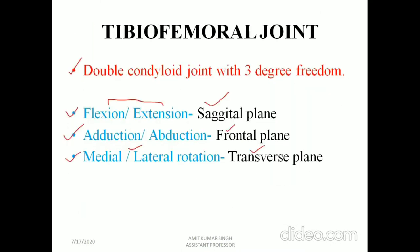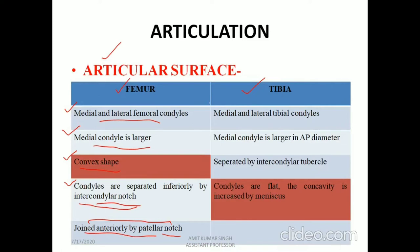For the tibia, we have medial and lateral tibial condyles. The medial condyle is larger in AP diameter, as shown in the superior view image. They are separated by the intercondylar tubercle. These condyles are flat, and the concavity is increased by the meniscus. The tibial condyles are concave in shape and femoral condyles are convex — this is very important for the mobility section, as mobility depends on whether the joint surface is convex or concave, applying the concave-convex rule.